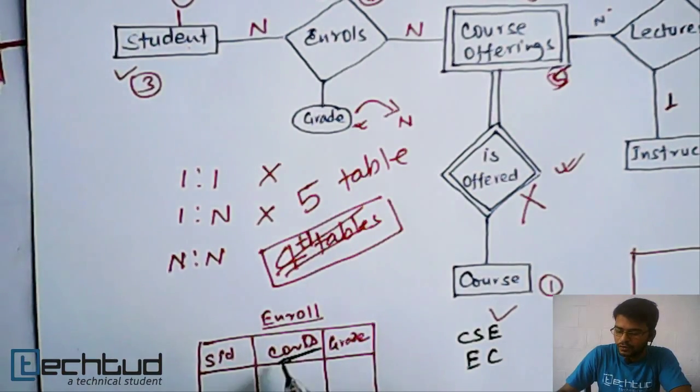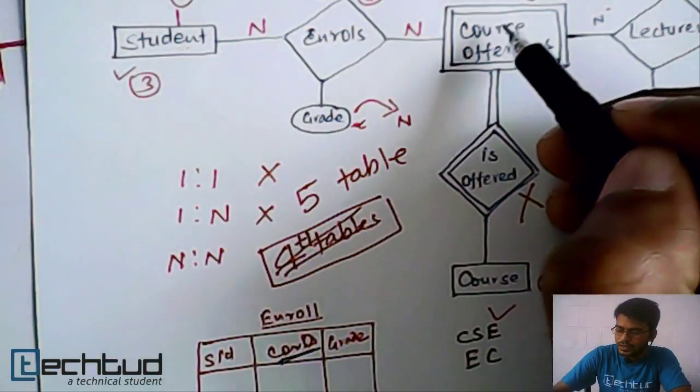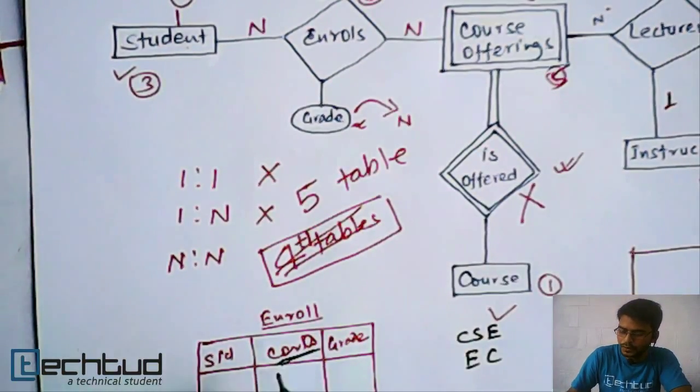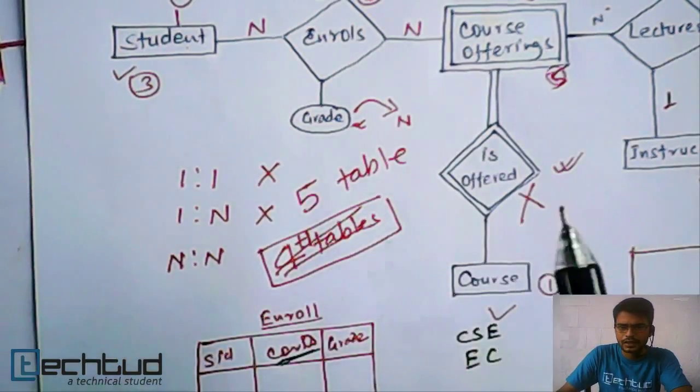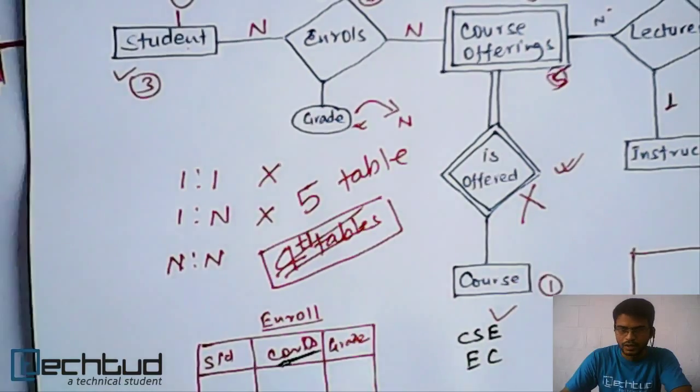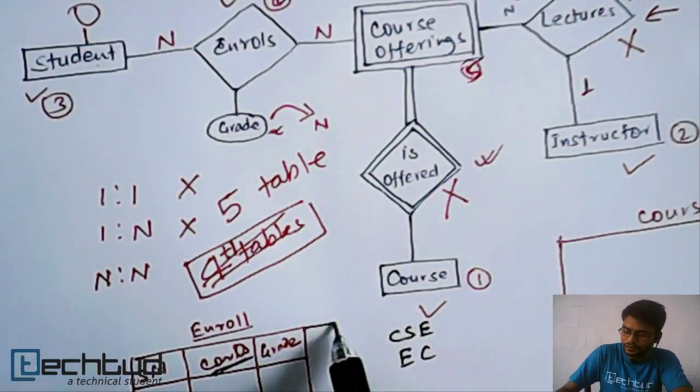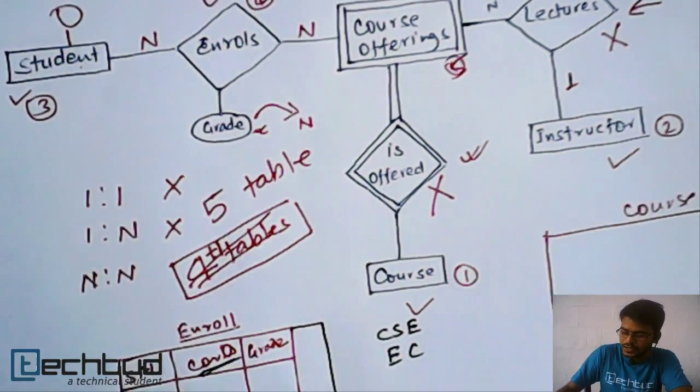So if you are storing course ID for both, then how will we store these two things? Because this is not the key itself. Course ID is not a key, it's a partial key. So in this case, it's very clear. We will take another attribute which is ID.